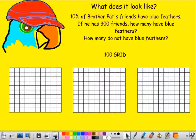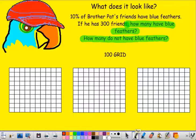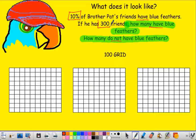So first we're going to work with Brother Pat. Brother Pat has 300 friends and 10% of those friends have blue feathers. We want to know how many friends have blue feathers and how many do not. We highlight our question and underline important words. The important numbers here: 10% is important — it tells us 10% have blue feathers, but we want to know what number that represents. And it's important to know that he has 300 friends.